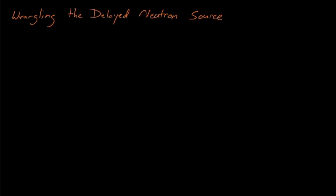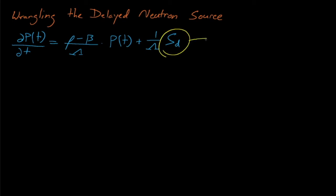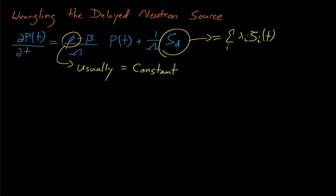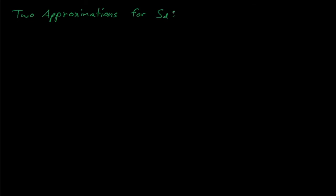From here, we can use one of several approaches to model our delayed neutron source, and it's worth noting that all these approaches tend to assume that our reactivity terms are constant over time. These approaches for modeling the delayed neutron source have the benefit of reducing our series of seven simultaneous differential equations to just one or two differential equations. There are two approximations we'll discuss: the constant delayed source approximation (CDS approximation) and the precursor accumulation (PA) approximation.